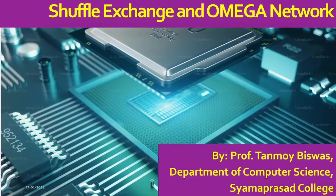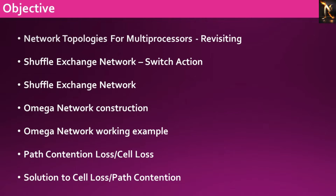In this video session, we will explore the operations of the shuffle exchange network and omega interconnection network. Additionally, we will delve into cell loss or path contention and discuss potential solutions to address these challenges. Our main goal is to review the network topologies of interconnection networks, followed by an examination of the actions of a two-port switch and a visual demonstration of its operation.